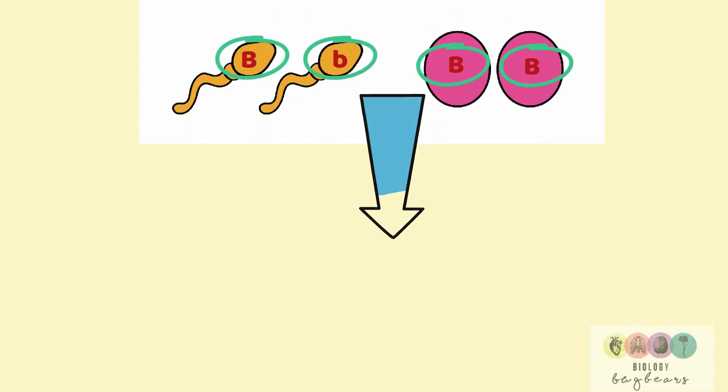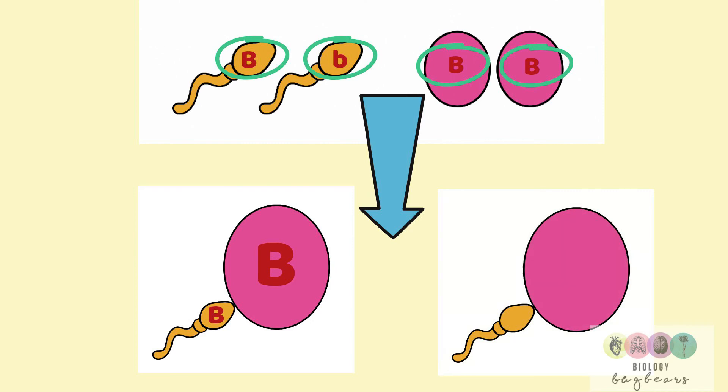So the alleles or the factors have been separated at gamete formation, which means that at fertilization the egg and the sperm are each contributing one of those alleles, one of those factors.